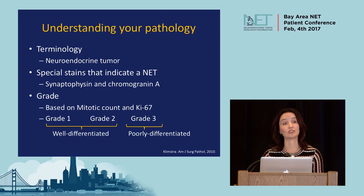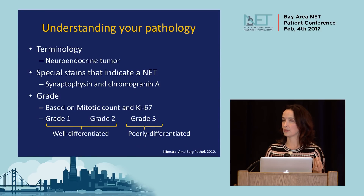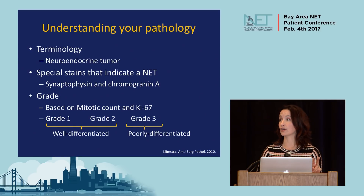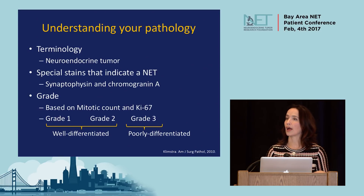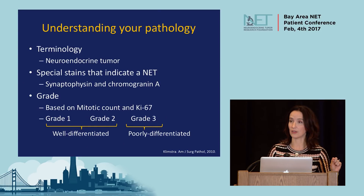Understanding your pathology is one of the first key things in NET basics. Pathologists use special stains to examine a biopsy or surgical specimen under the microscope. The two key stains that identify a neuroendocrine tumor are synaptophysin and chromogranin A. Grade reflects how rapidly dividing the cells are, determined by looking at the cells under the microscope and by special stains. Two key measures are Ki67 and mitotic index. Grade one and two are slower-growing, well-differentiated neuroendocrine tumors; grade three is a poorly differentiated, faster-growing neuroendocrine carcinoma.